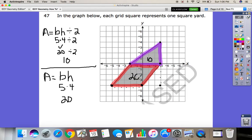And then because we want the shape of the entire shaded area, we're going to go ahead and add these together. So 20 plus 10 is going to give us 30. So it's 30 units squared.